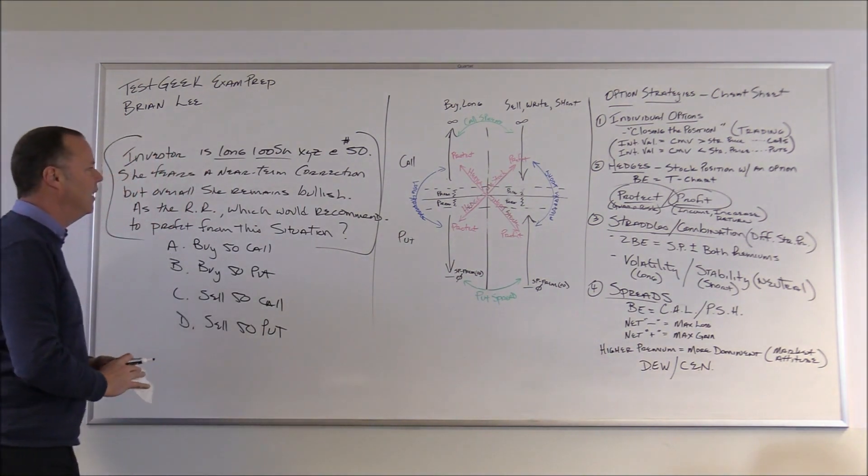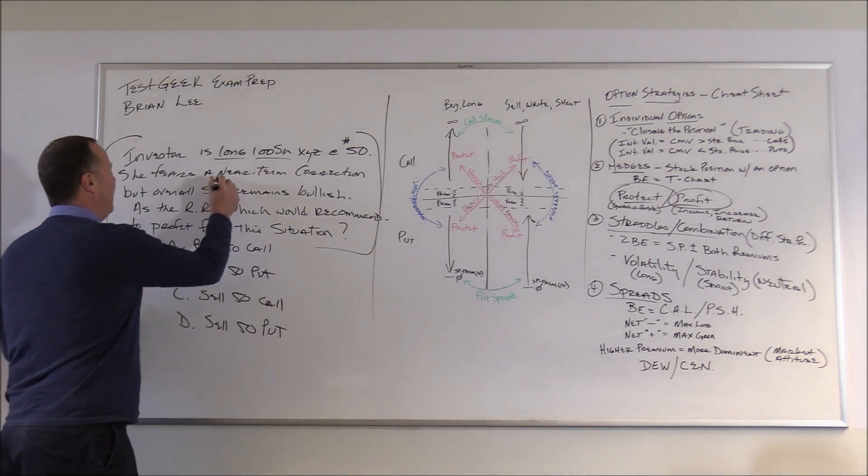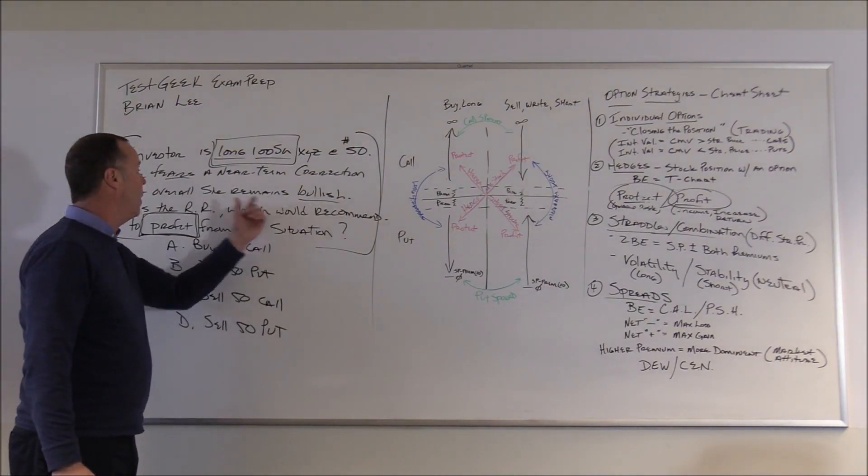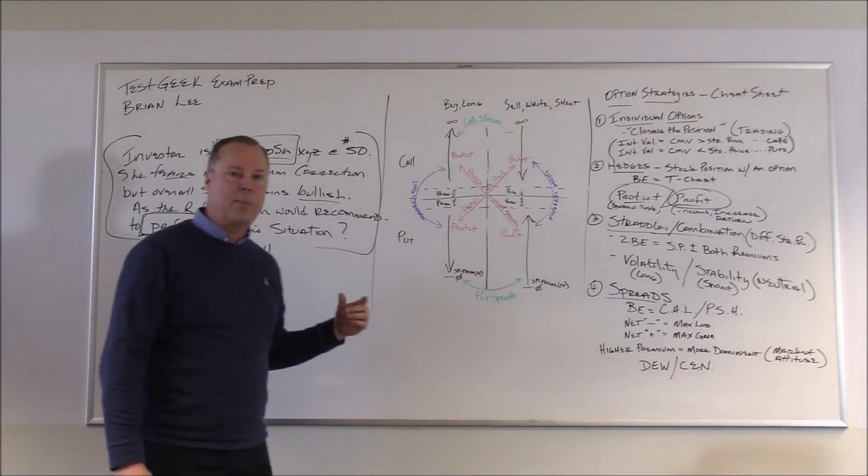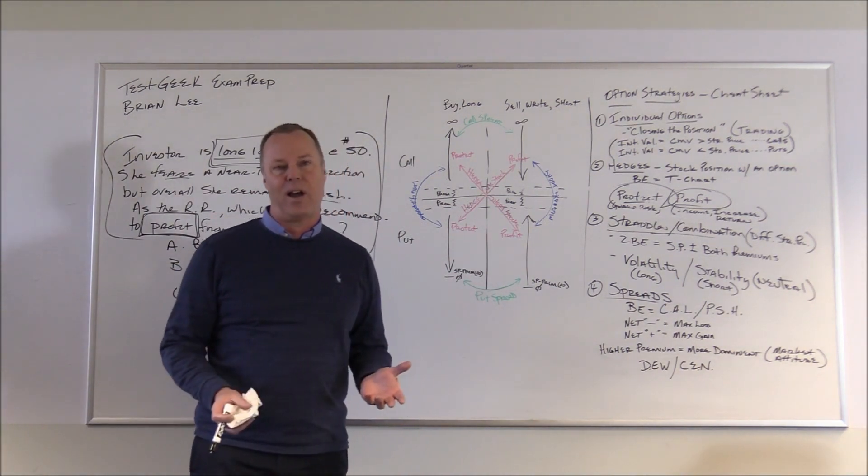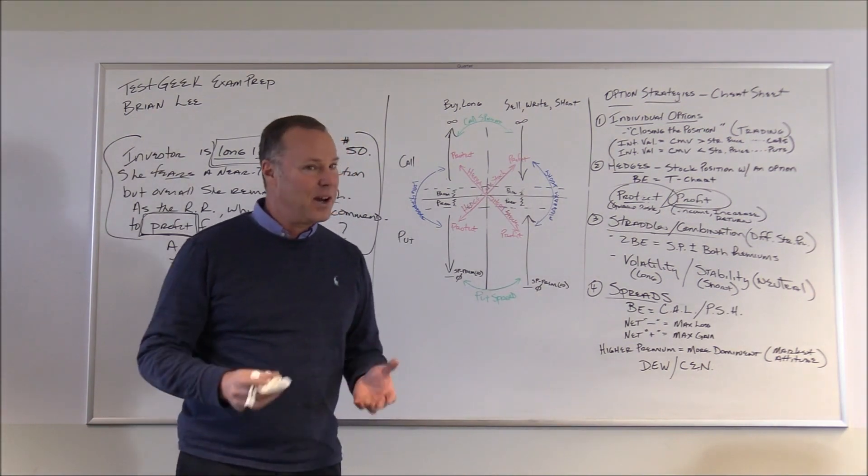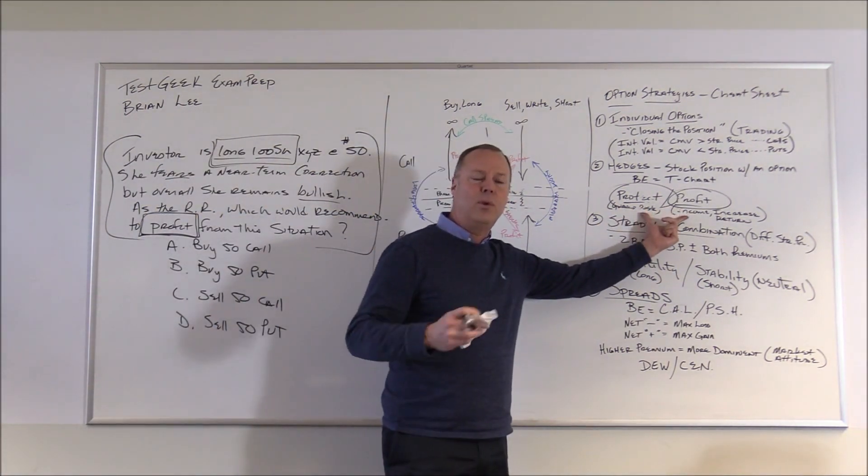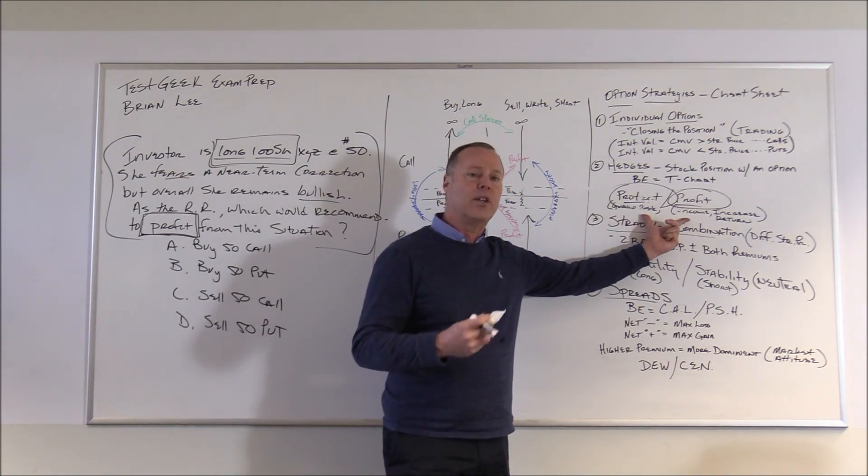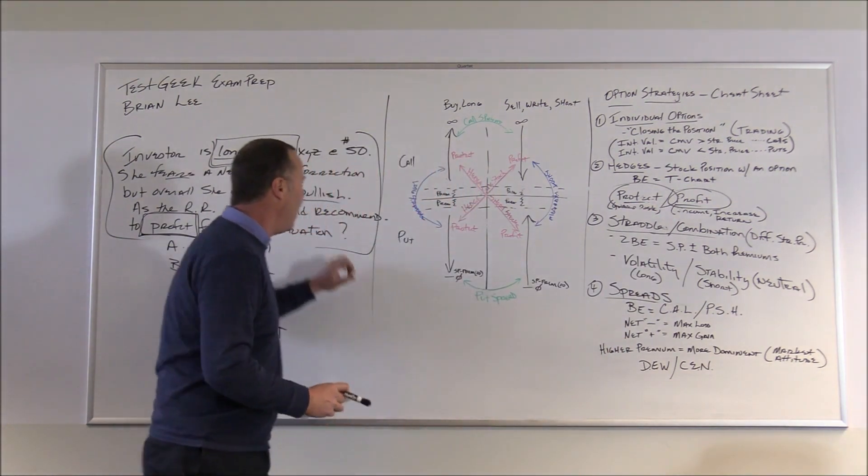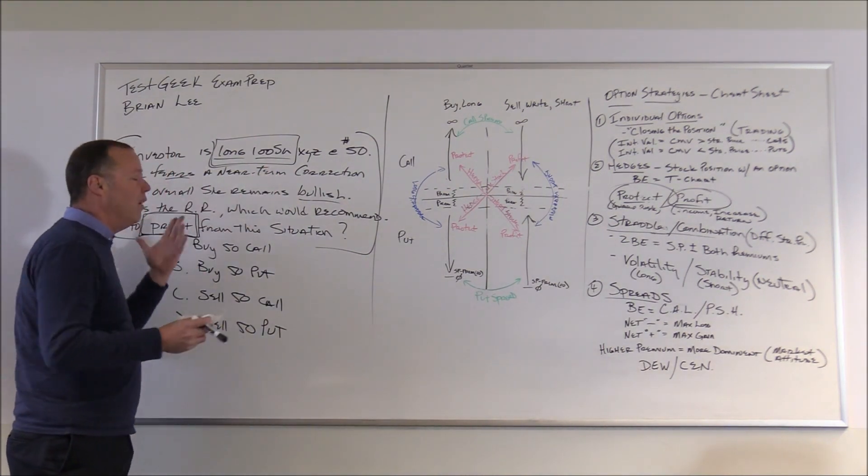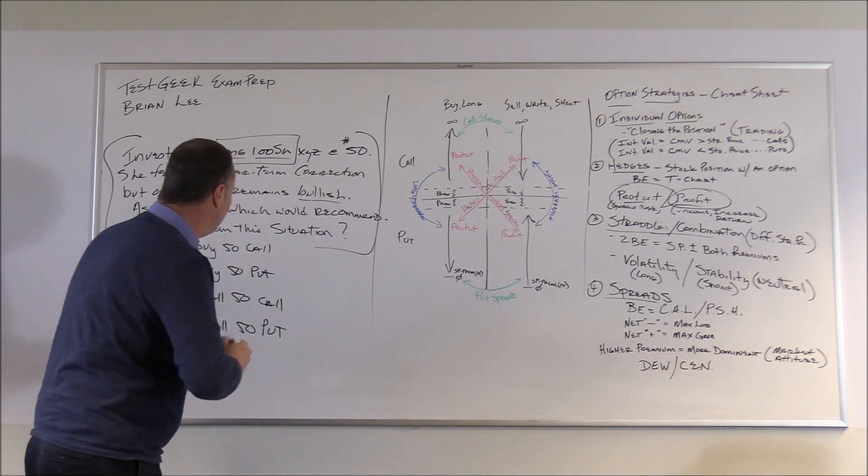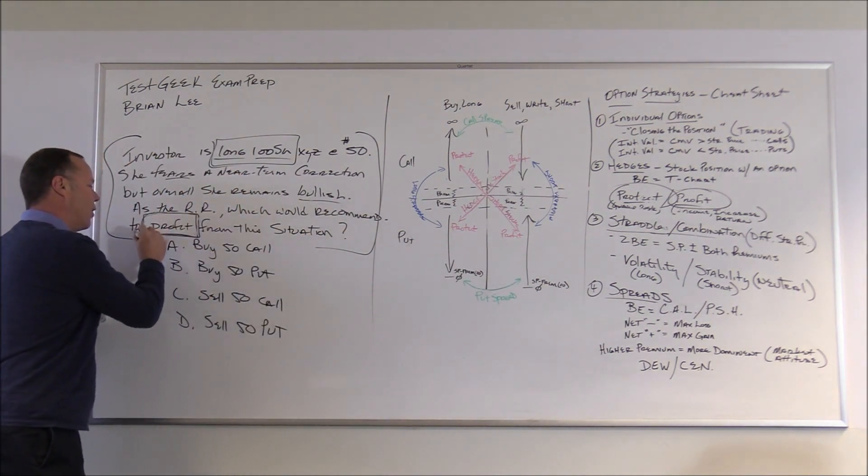We've identified it as a hedge, a stock position with an option. Remember, in our strategy, we're using the option for one of two things: to either protect the stock or to generate income, increase return, increase the overall profit in stock. So which one is it? She fears a near-term correction, but overall she remains bullish. These, of course, are what I refer to as test distractors. They're there to make you make some sort of assessment or to analyze. And of course we know what happens when you do that - you become paralyzed by analysis. So they're really just distractors. With hedges, you're looking for the two main strategies. What we're looking for are those secondary objectives: protect or profit. And there it is right there, profit.